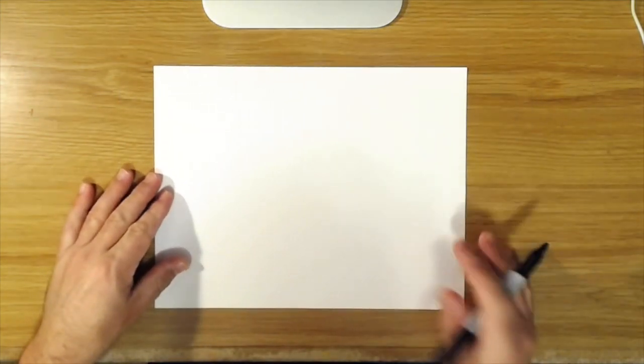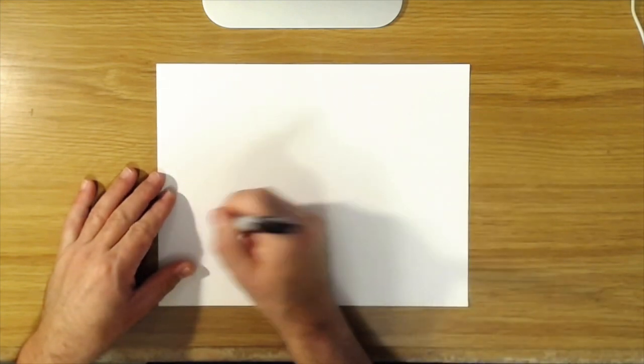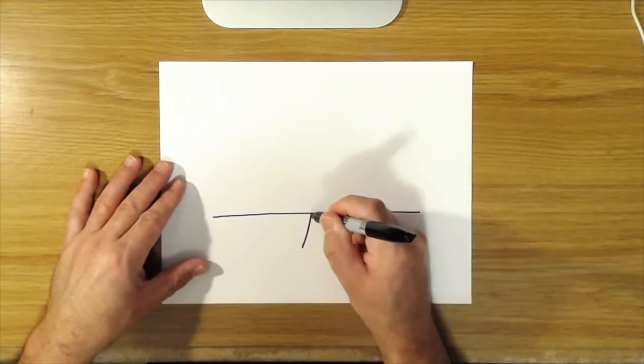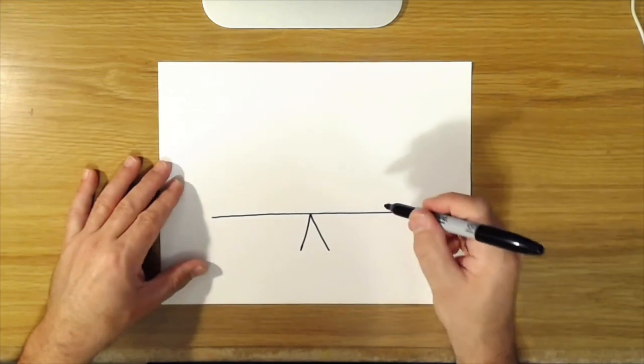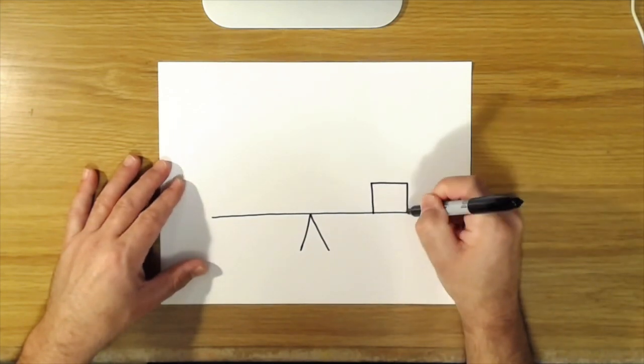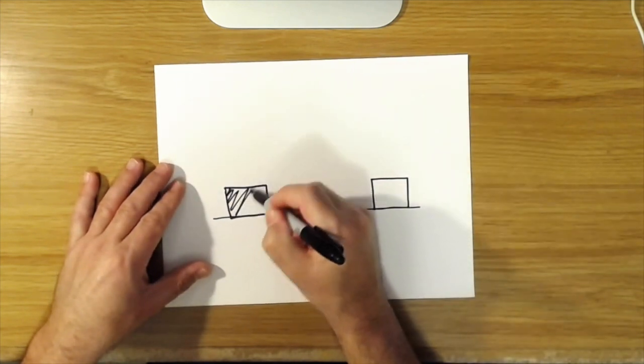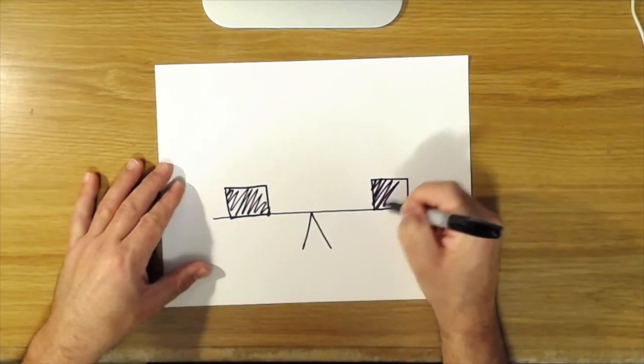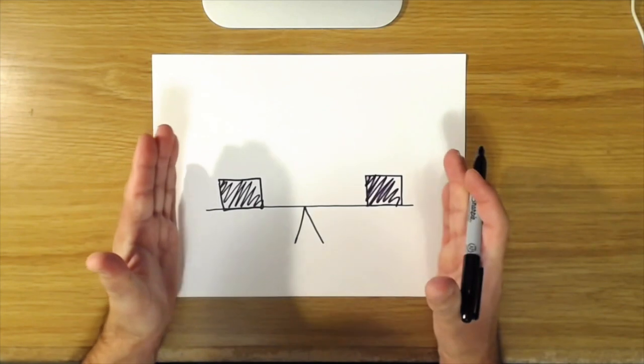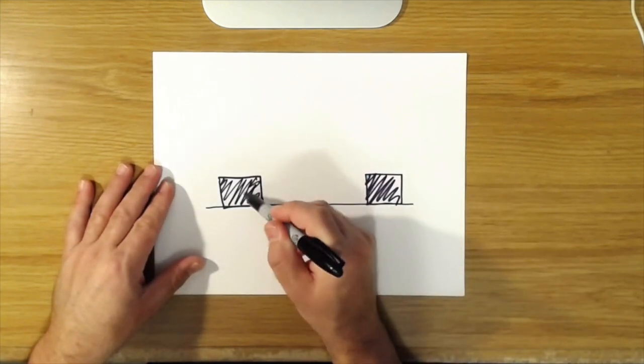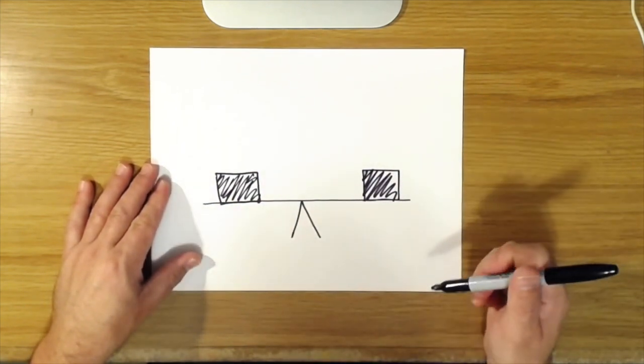Basically what it is, in order to talk about asymmetrical balance first I'll explain symmetrical balance. Everyone probably intuitively knows what symmetrical balance is. If you had a teeter-totter or a seesaw, if you have two more or less equal masses on that seesaw it's going to be balanced, but this is also symmetrical essentially. And while this is balanced, it's very static and not that visually interesting.